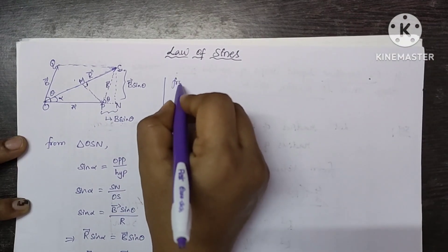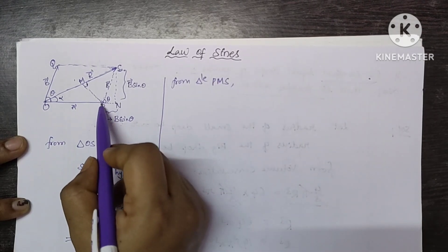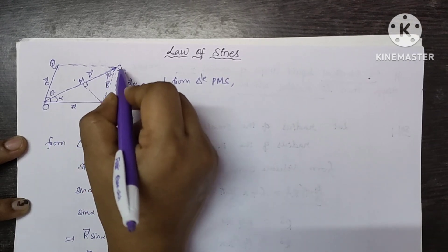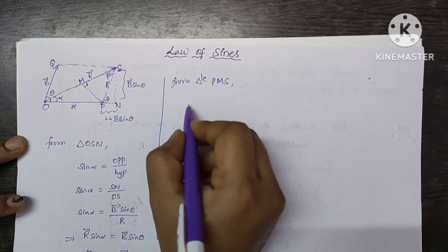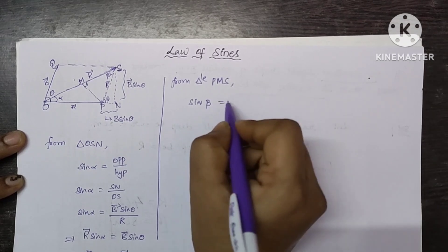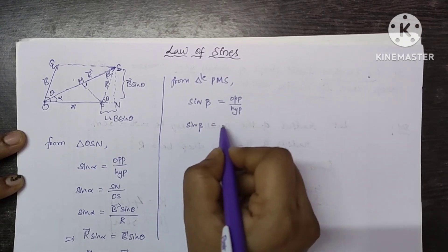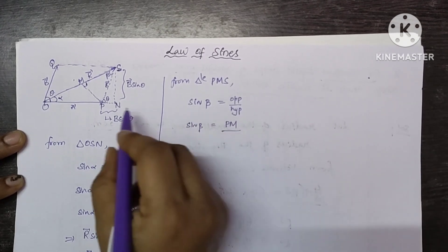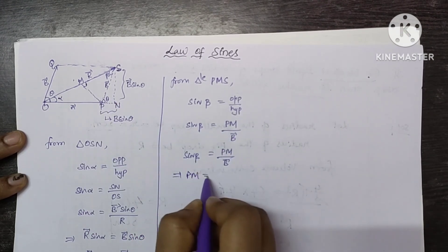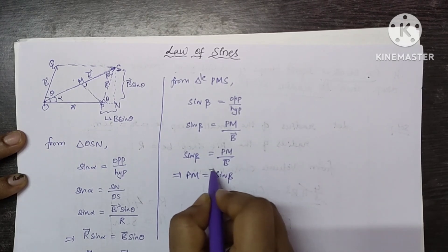Now from triangle PMS — look at this triangle PMS. If the angle at point S is beta, we can write: sin β equals opposite side by hypotenuse, so sin β equals Pm divided by P̄. That implies Pm equals P̄·sin β. Let this be equation number 2.